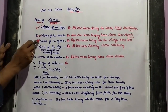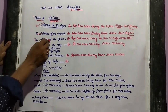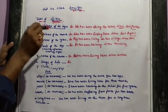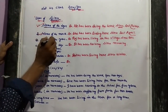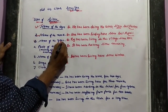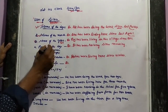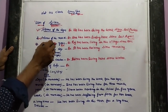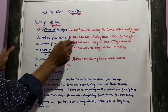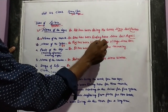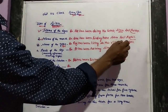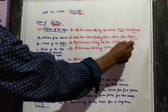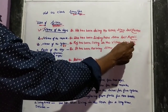Third, we use 'since' with the name of the year. For example: 'She has been living in this village since 2011.' Here '2011' is the name of the year, so you use 'since'.